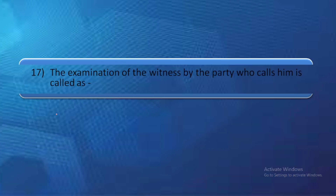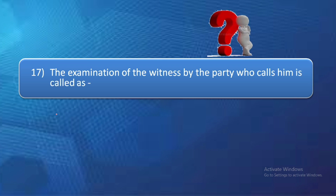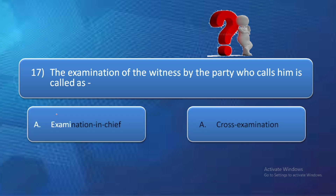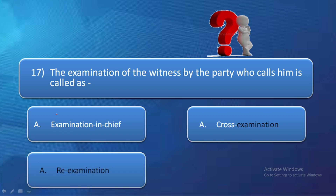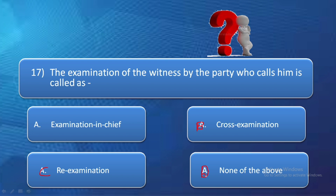Next question: The examination of the witness by the party who calls him is called as — option A: examination in chief, option B: cross examination, option C: re-examination, and option D: none of the above. The examination of the witness by the party who calls him is known as his examination in chief. So the correct answer is option A — examination in chief.